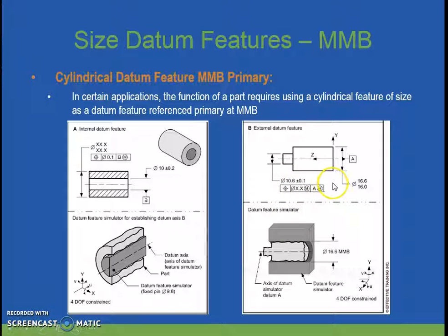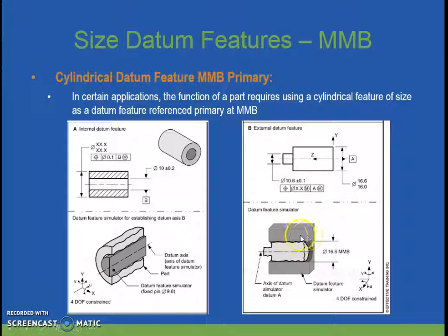In this situation, we have datum A, which is the external feature. It is referenced here at maximum material boundary, so therefore it's 16.6. Maximum material boundary occurs at 16.6. So in this case, your datum feature simulator is an internal cylinder with 16.6 MMB for your size.